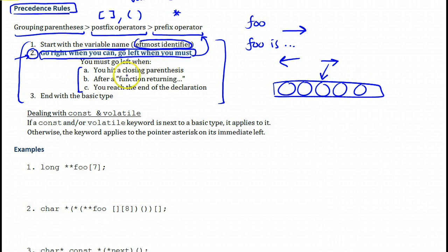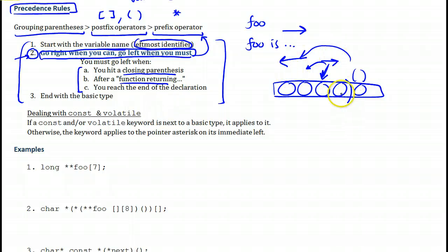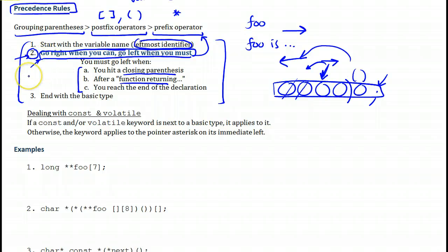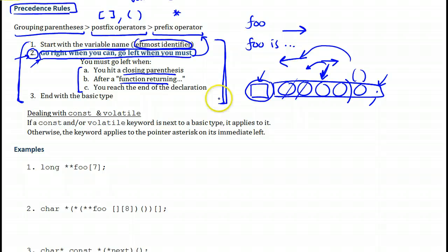You go right when you can, and go left when you must. You must go left when you hit a closing parenthesis — that means we are trying to group something. You must also go left after you encounter a function, because you want to find the return type. And you must go left when you reach the end of the declaration at the semicolon, consuming all elements before it. Once you are done, you always end with the basic type, which will be at the beginning.